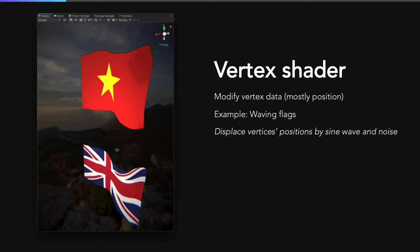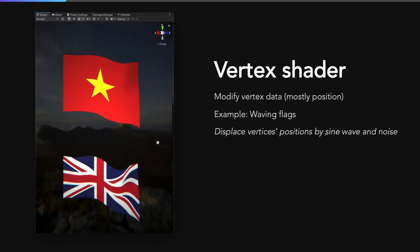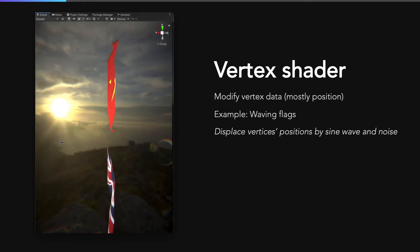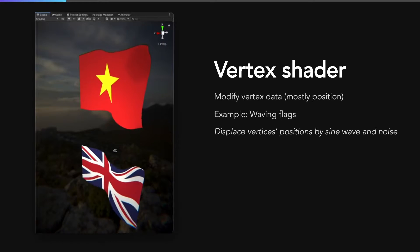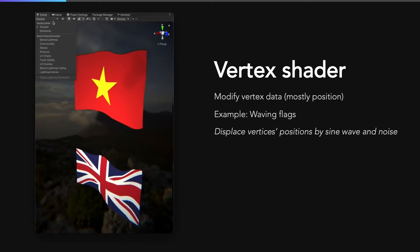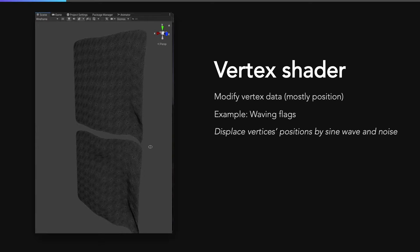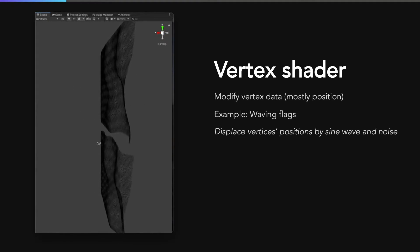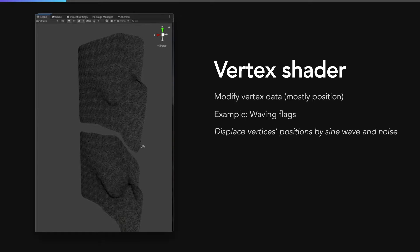The vertex shader is used to modify vertex data, and mostly vertex positions. For example, take a look at this following flux. This waving effect is achieved by adjusting vertex positions using a sine wave, which is combined with a noise texture to add randomness. Wait until I toggle the wireframe rendering mode — you can easily see that the mesh is actually being deformed.